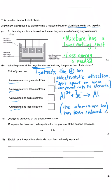The correct answer that's going to get us the marks is that aluminium ions gain electrons. The option saying 'aluminium atoms gain electrons' is a decoy — they aren't atoms at the beginning; they become atoms once they have gained the electrons.